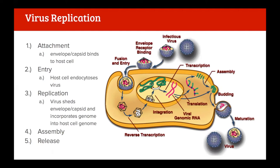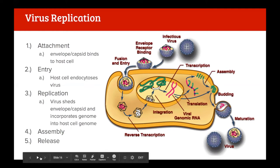Once the viral genetic material is incorporated, the host cell - if it hasn't realized it's infected - proceeds to transcribe and translate its genome as normal. Now that there are viral components in the genome, it produces viral proteins alongside normal proteins. These viral proteins assemble into new virions, potentially thousands of them. The new virions are then released from the cell through a process called budding. Whether it's an RNA or DNA virus, it does things slightly differently and has different tools to accomplish replication.